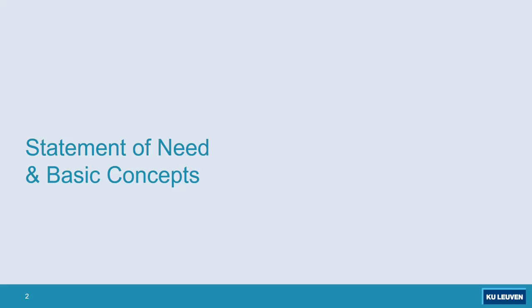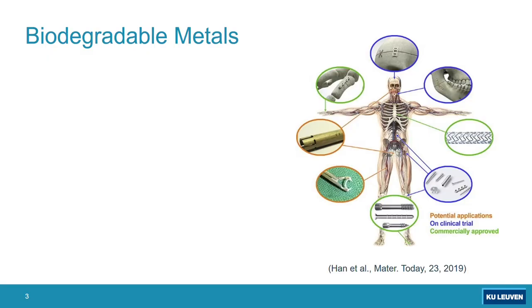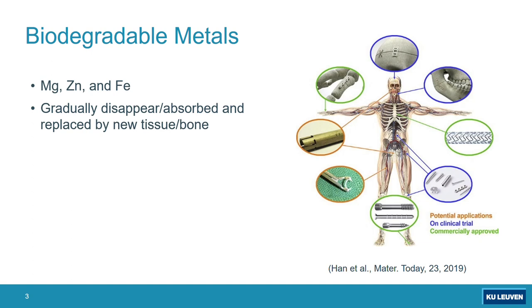Talking about biodegradable metals, we are usually referring to zinc, magnesium, and iron. We mean that we put some materials inside a body and they gradually disappear and get absorbed, replaced by new tissues.